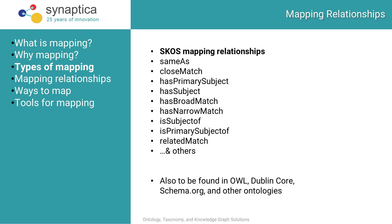Just in SKOS, there are too many mapping properties to list on a slide, and additional relationships useful for mapping can be found in OWL, Dublin Core, Schema.org, and other ontologies. But just in SKOS, there's 'sameAs,' which sounds like exactly what it is, 'closeMatch,' which is not quite 'sameAs,' and things like 'hasBroadMatch' and 'hasNarrowMatch.'